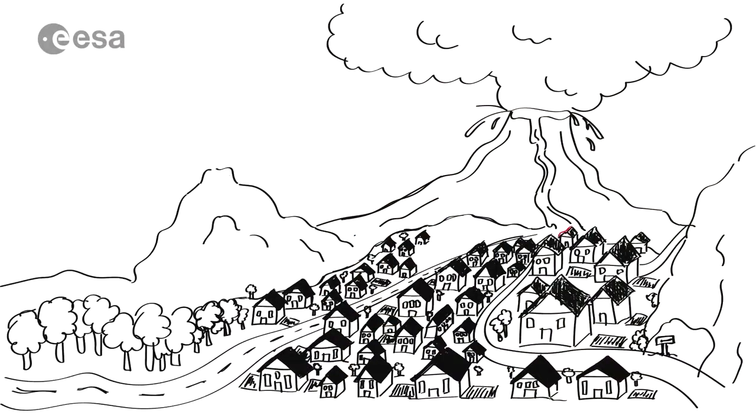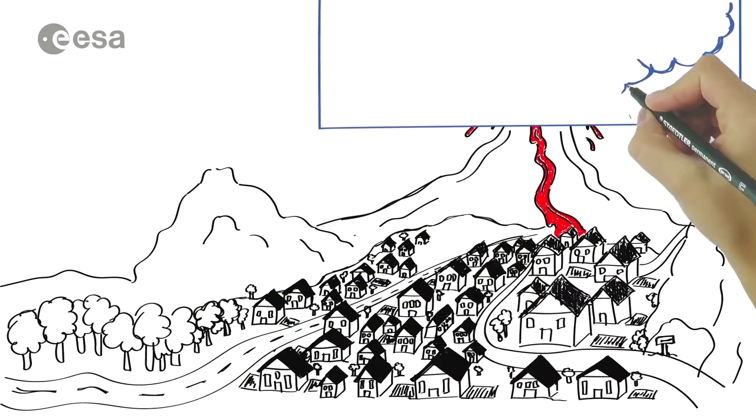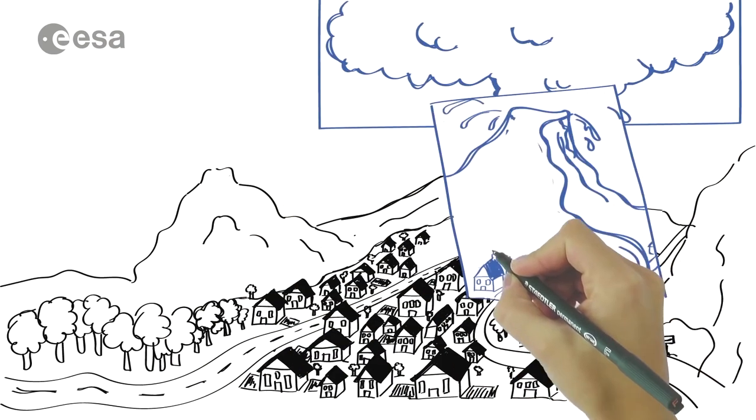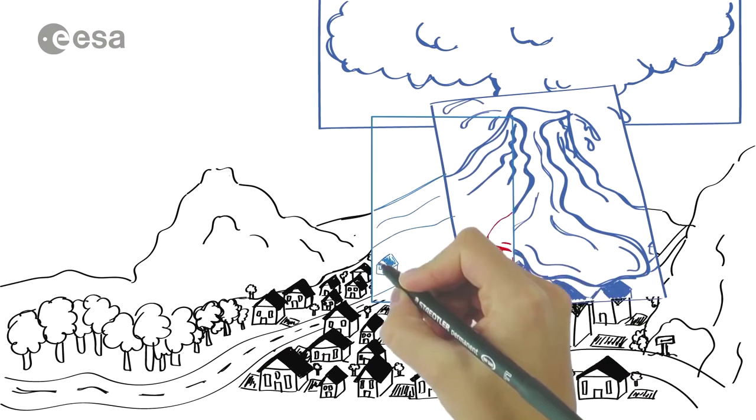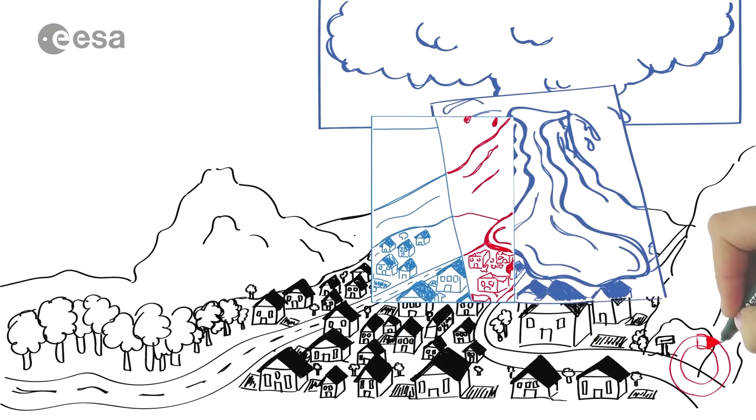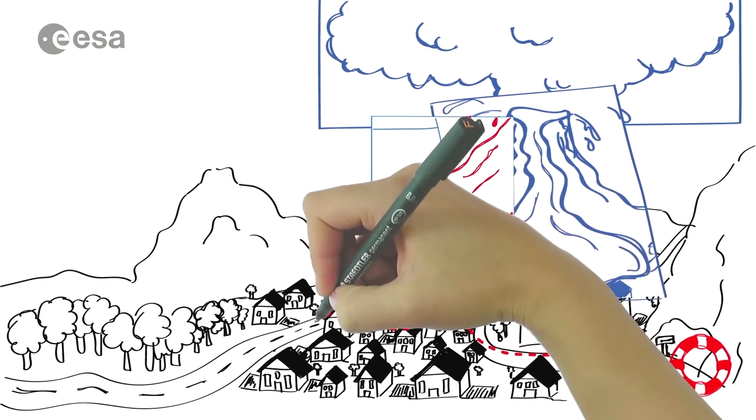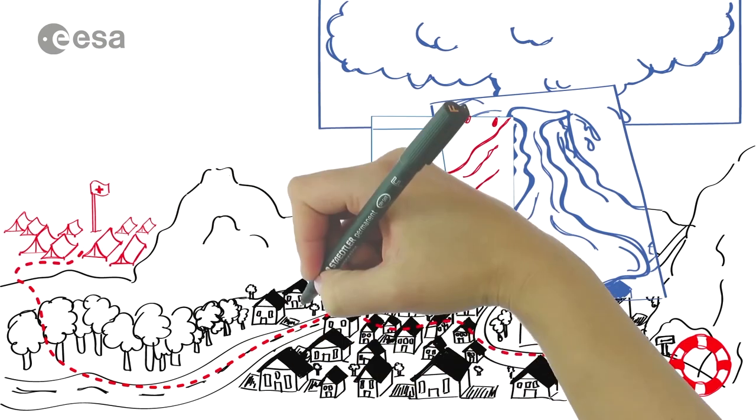A volcanic eruption in Africa. Special satellites are configured to observe the lava, smoke, and dust, and to deliver high-resolution maps of the affected communities. Experts can accurately assess whom to evacuate and where to establish a safe refugee camp.